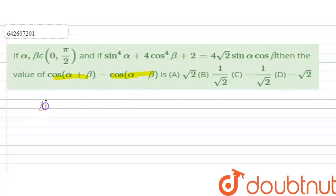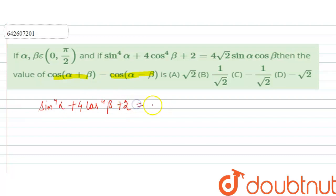We are given: sin⁴(alpha) + 4cos⁴(beta) + 2, which is equal to 4√2 · sin(alpha) · cos(beta).